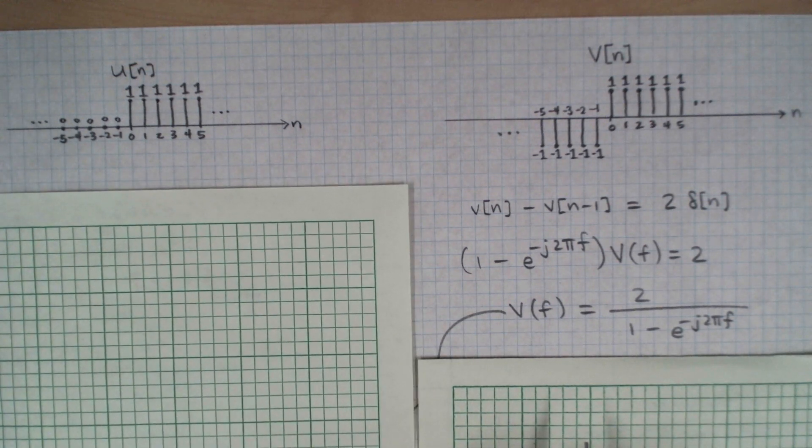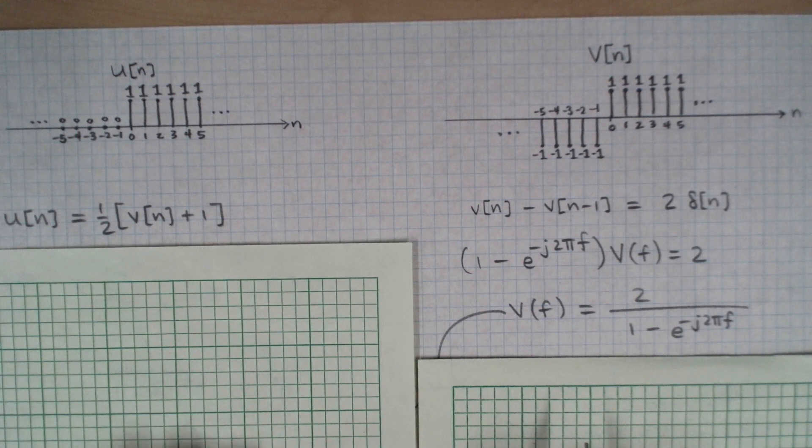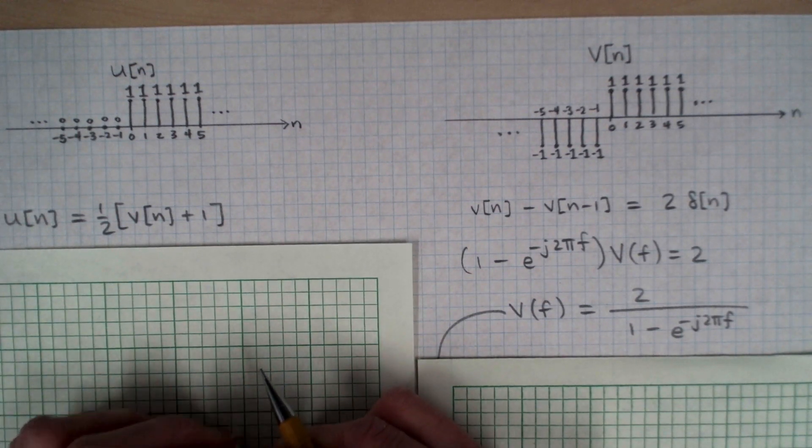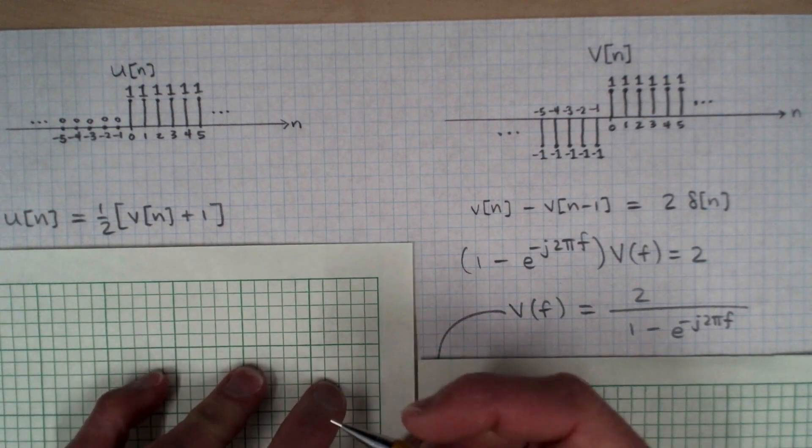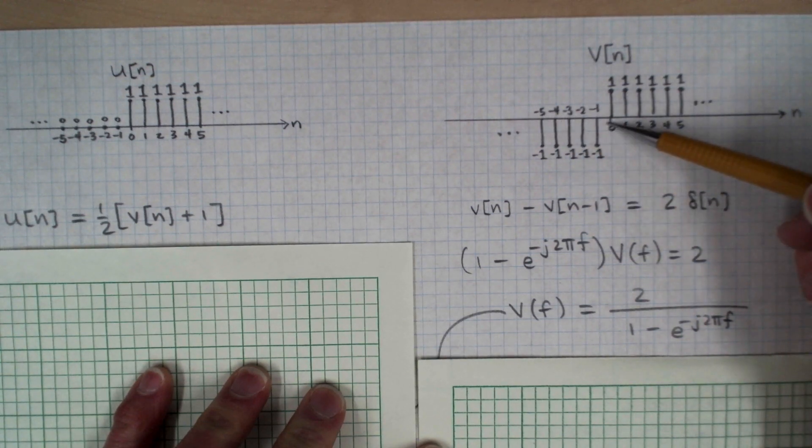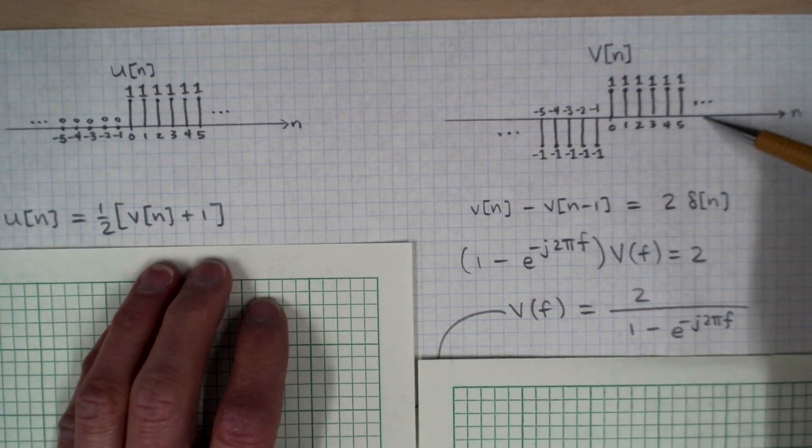Now let's move back over to the other side and work on the unit step function. The relation between U and V is shown here mathematically, but I think it's pretty easy to see from the picture that if we take the V function and shift it up by 1, all of the negative time samples will be 0, and all of the positive time samples will be 2.